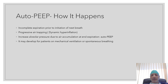So how does auto PEEP occur? There is incomplete expiration prior to initiation of the next breath, and this in turn leads to accumulation of air, or progressive air trapping with each breath, which is also known as dynamic hyperinflation. Increased air accumulation leads to an increase in alveolar pressure, and this is known as auto PEEP. It is important to understand that auto PEEP may develop in patients on mechanical ventilation and can also occur in patients who are on spontaneous breathing, but our discussion will remain focused on patients on mechanical ventilation.